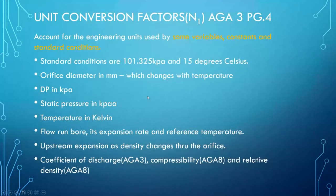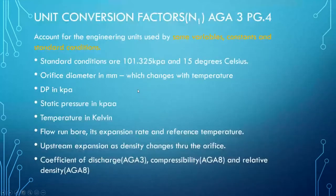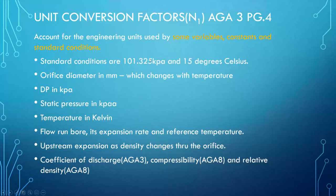Unit conversion factors are a significant topic in the ILM. The M1 variable is the unit conversion factor, and its purpose is to account for the engineering units used by various constants and standard conditions. Standard conditions are typically 101.325 kPa and 15 degrees Celsius when doing flow measurements.